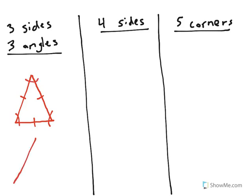Now, it doesn't matter what it looks like. I could draw one side here, two sides, three sides. It still has three sides and three angles. So this shape is a triangle.